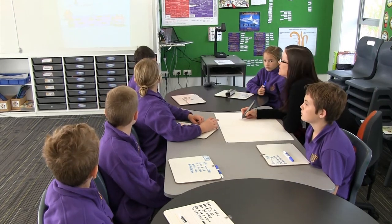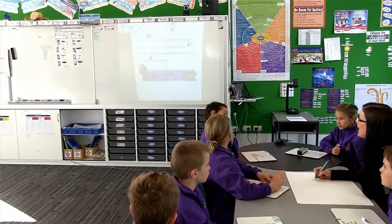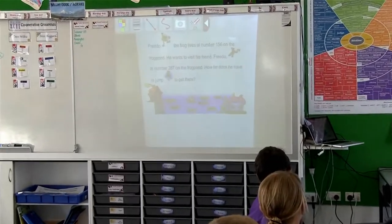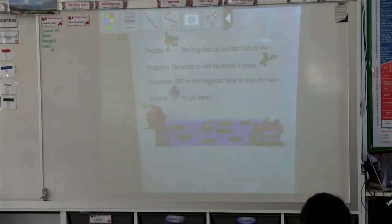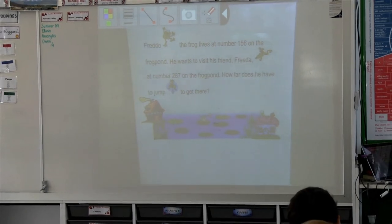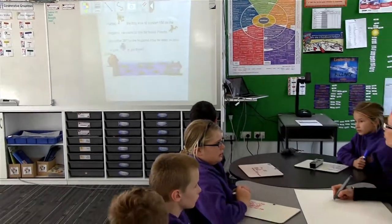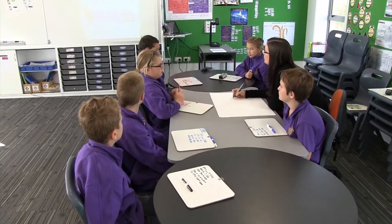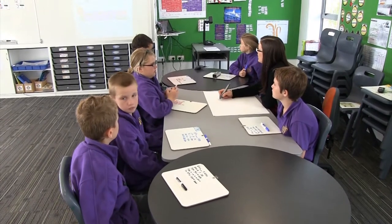He wants to visit his friend Freda at 287 on the Frog Pond. How far does he have to jump to get there? I want you to have a discussion with the person beside you about what you would do to solve that problem and what the number sentence might be.